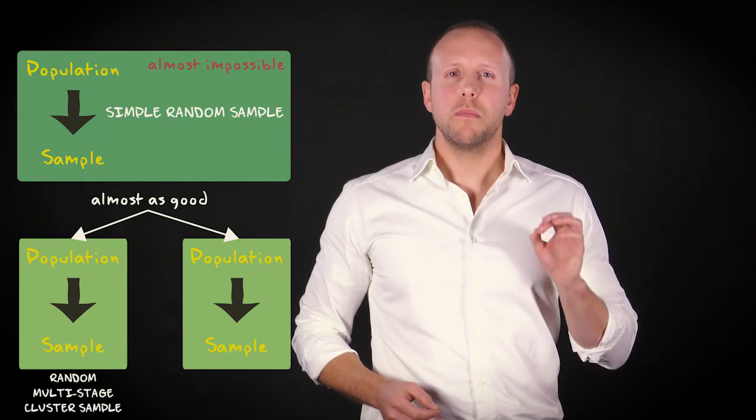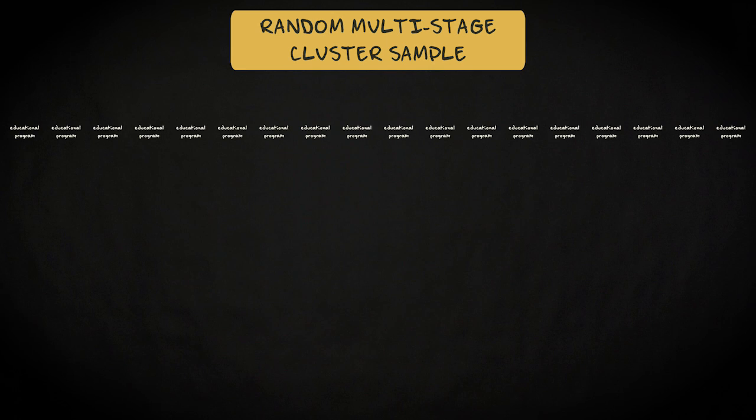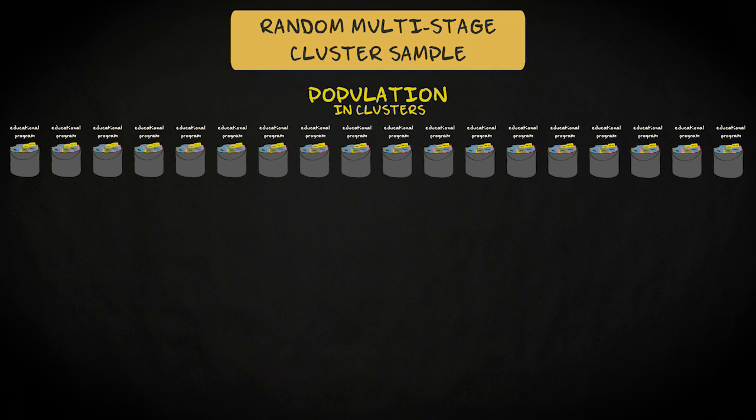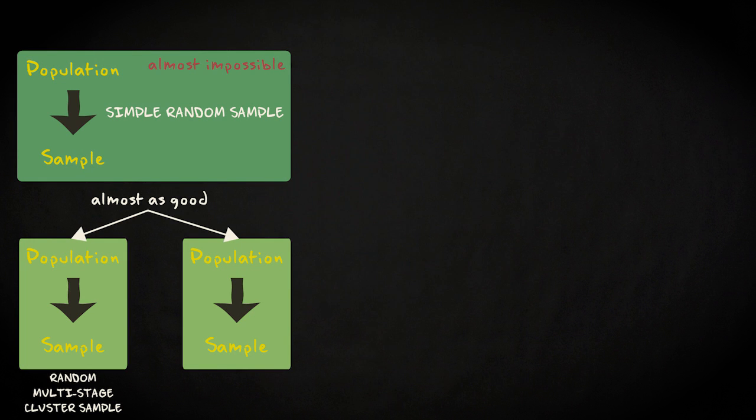The first alternative is a random, multi-stage cluster sample. It works as follows. First, you identify a large number of clusters within your population. For instance, the various educational programs in London in which the students are enrolled. Every program is represented by a bucket, and you put the pieces of paper with the names of students in the buckets of the programs in which they are enrolled. Next, you randomly pick a number of buckets, say 10. Then you select all pieces of paper within these buckets. That's your sample. A random, multi-stage cluster sample is a good choice if you don't have a good sampling frame, or if drawing a simple random sample would be very expensive.